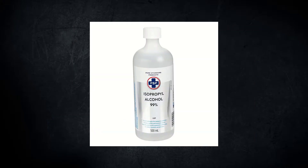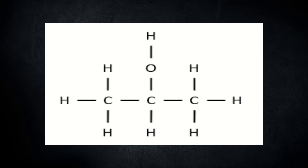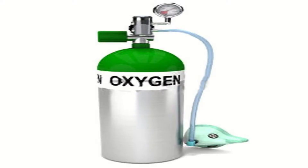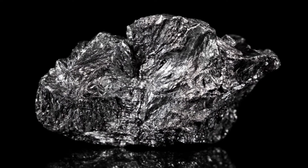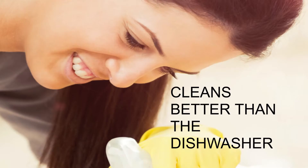Rubbing alcohol, also known as isopropyl alcohol, is a molecular compound formed by mixing eight hydrogen atoms, a single oxygen atom, and three carbon atoms. Just like bleach, rubbing alcohol is able to disinfect and clean rough and smooth surfaces alike, even helping with open body wounds by cleansing the area of any dirt.